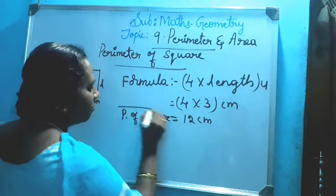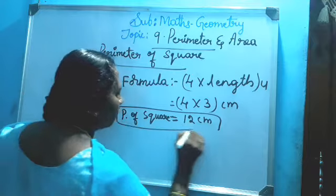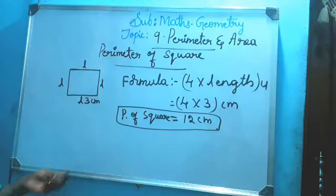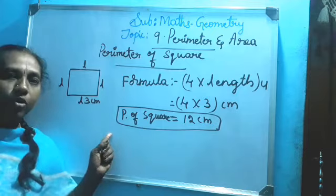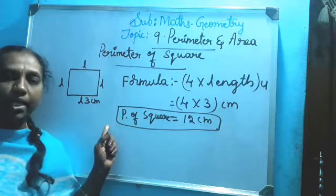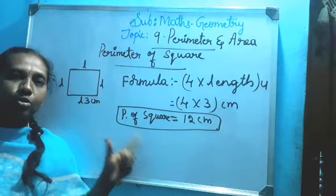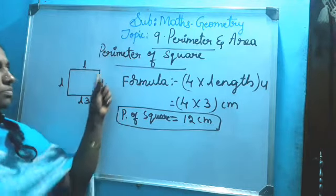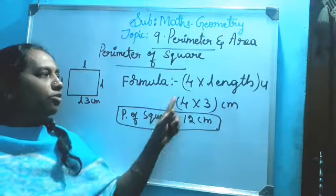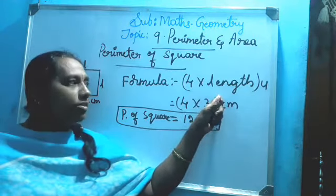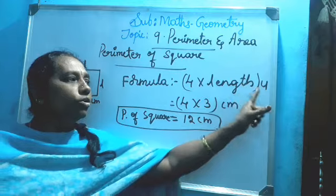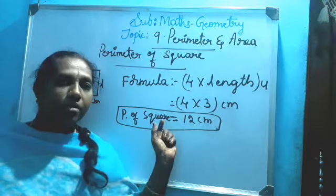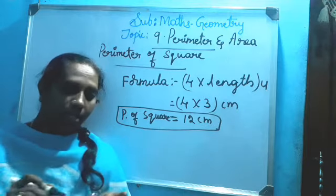Easy, no children? But practice it well. Formulas you should memorize - if you remember the formulas, sums are easy. Perimeter of rectangle: 2 length plus 2 breadth. Perimeter of square: 4 into length. Practice well and problems will be easy.